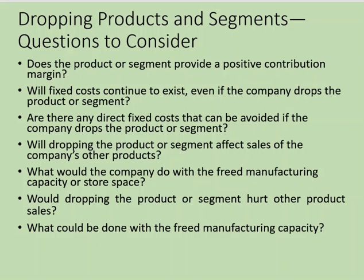What would we do with the freed manufacturing capacity? Could we make another product that might be more profitable? We're going to follow the two key guidelines for special business decisions: focusing on relevant data and using the contribution margin approach. The relevant data are the changes in revenues and expenses, but now we're considering a decrease in volume rather than an increase, as we did in special pricing.